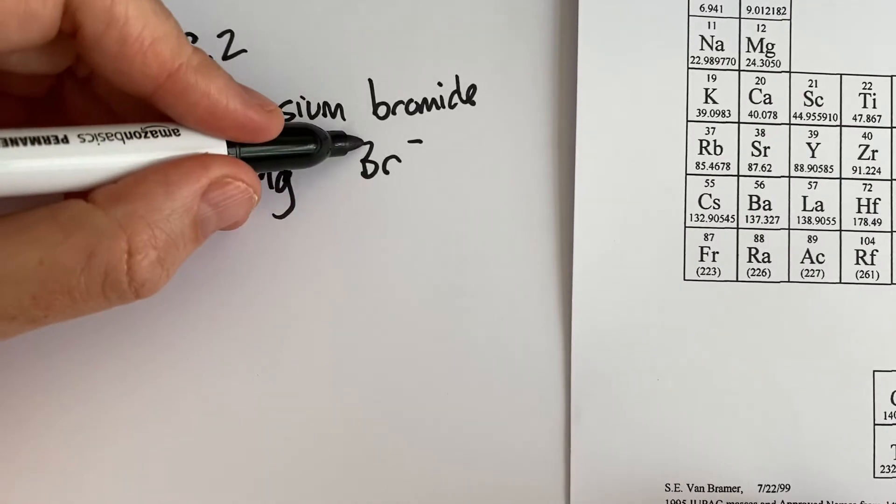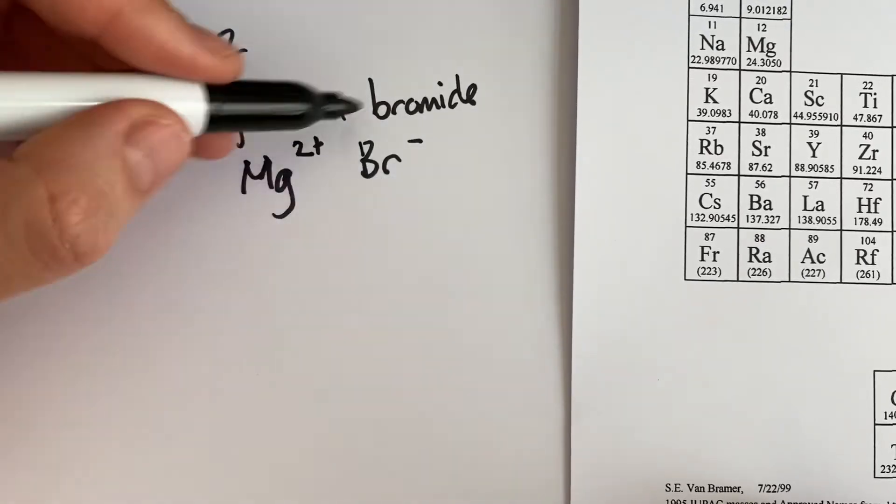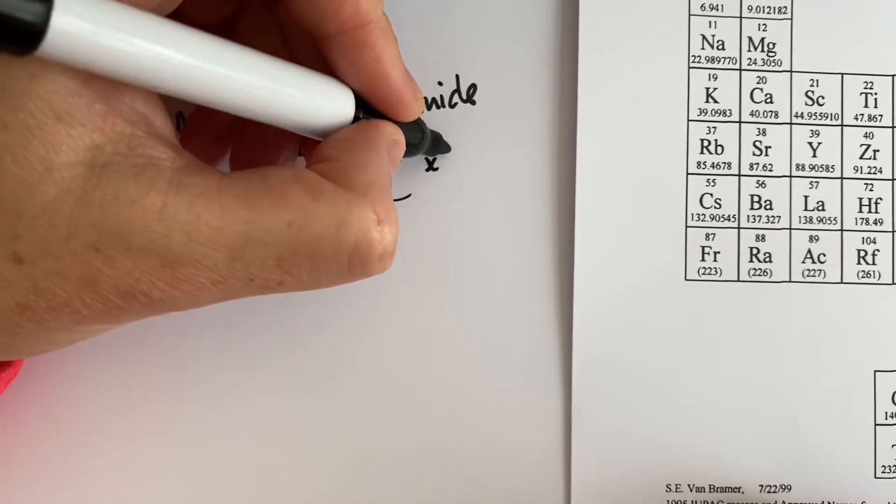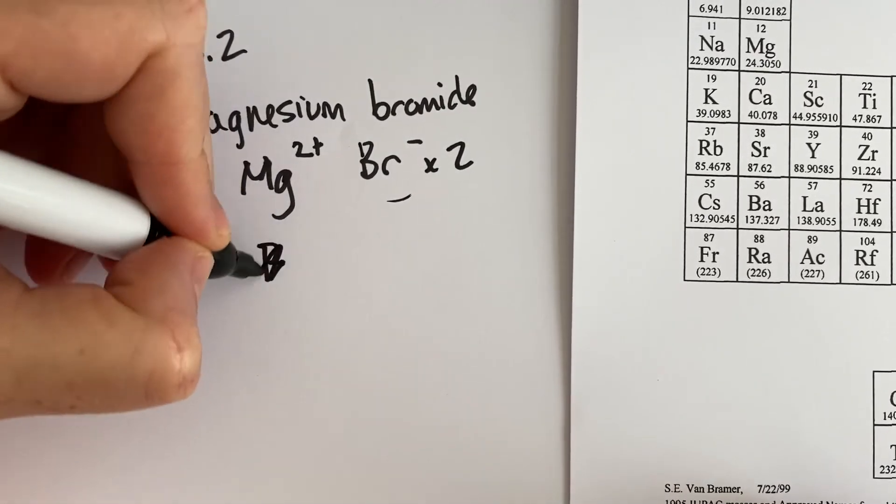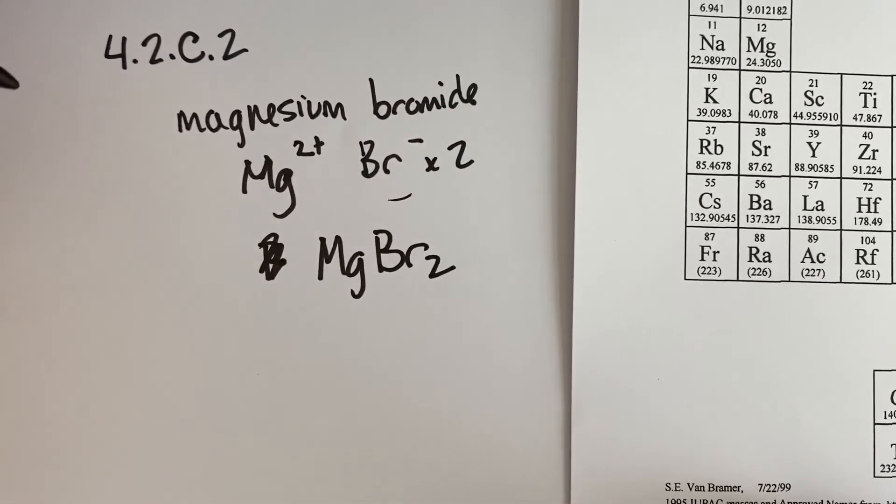You do that by finding a way to get the positive to equal the negative. Here we have more positive than we do negative, so we need more negative. How many more negatives do we need? Well, we have two positives, so we need two more negatives. And that's how we end up getting MgBr2 as our answer.